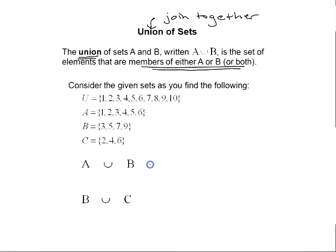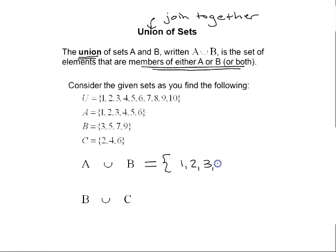Let's find A union B. A is {1, 2, 3, 4, 5, 6} and B is {3, 5, 7, 9}. The union of sets A and B are all of the elements that belong to A or B or both. So that will be {1, 2, 3, 4, 5, 6, 7, 9}.